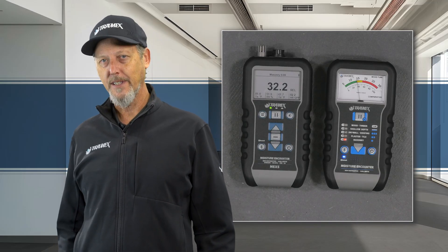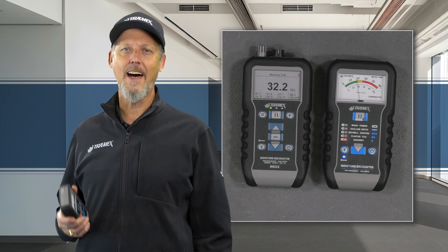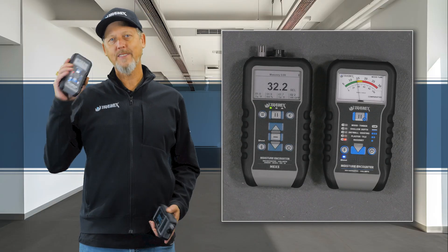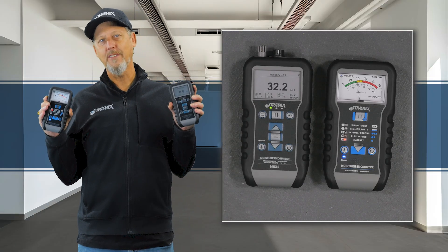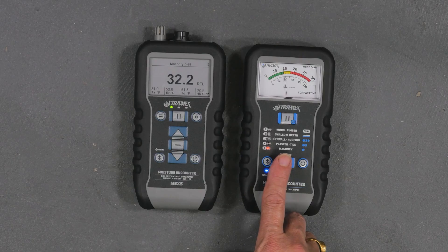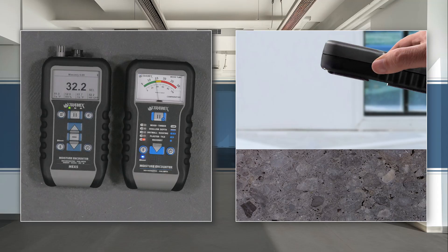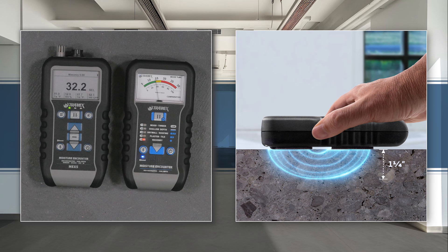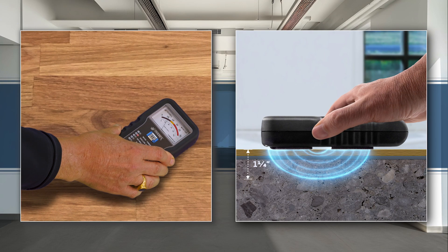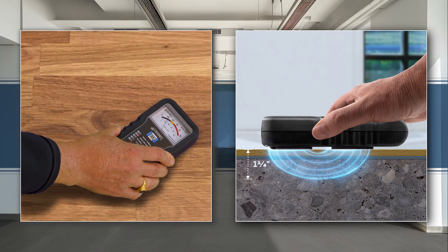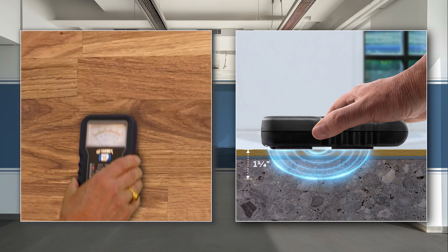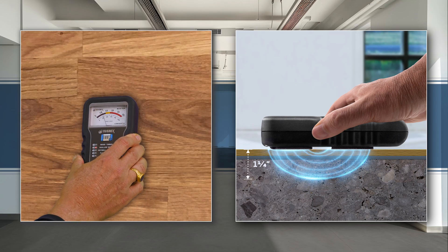This allows us to detect elevated moisture easily and instantly and non-destructively with the Tramex ME5 or MEX5. Keep in mind that these comparative scale settings take a reading an inch and a quarter deep, so you always have to consider what's in your range of detection.